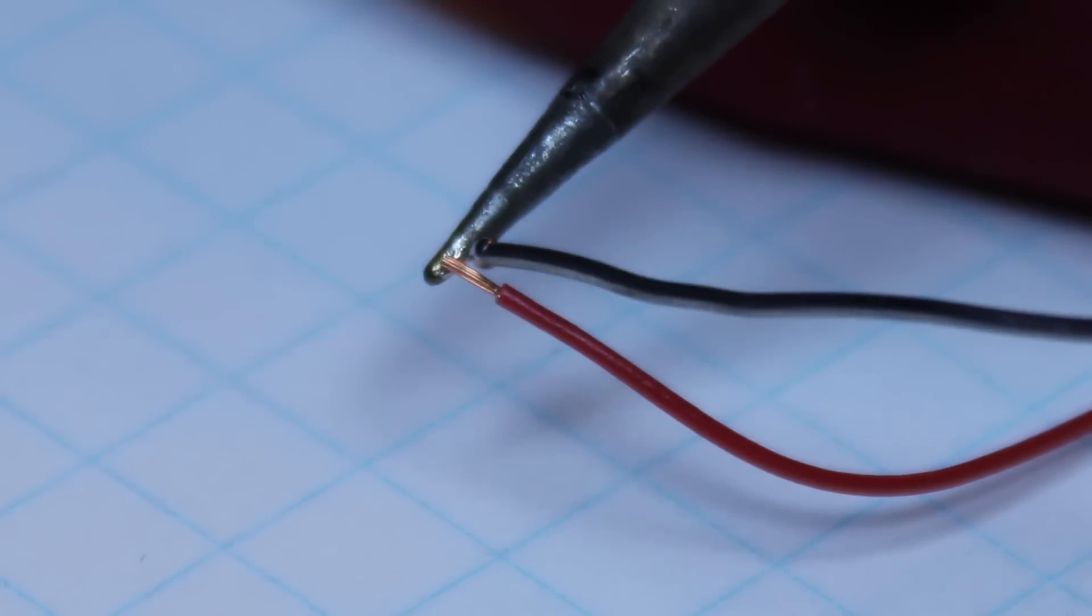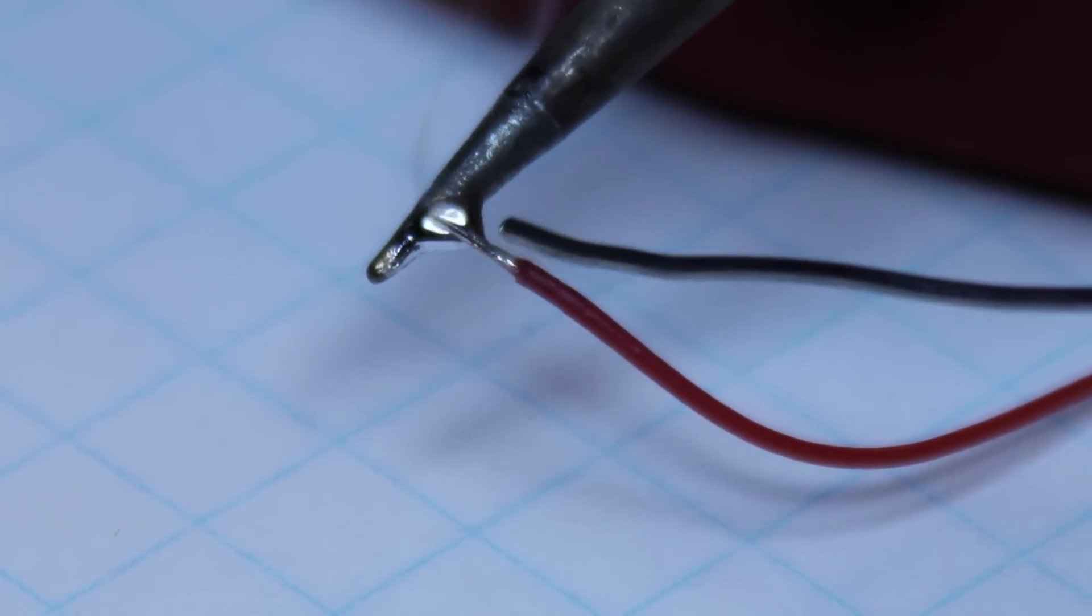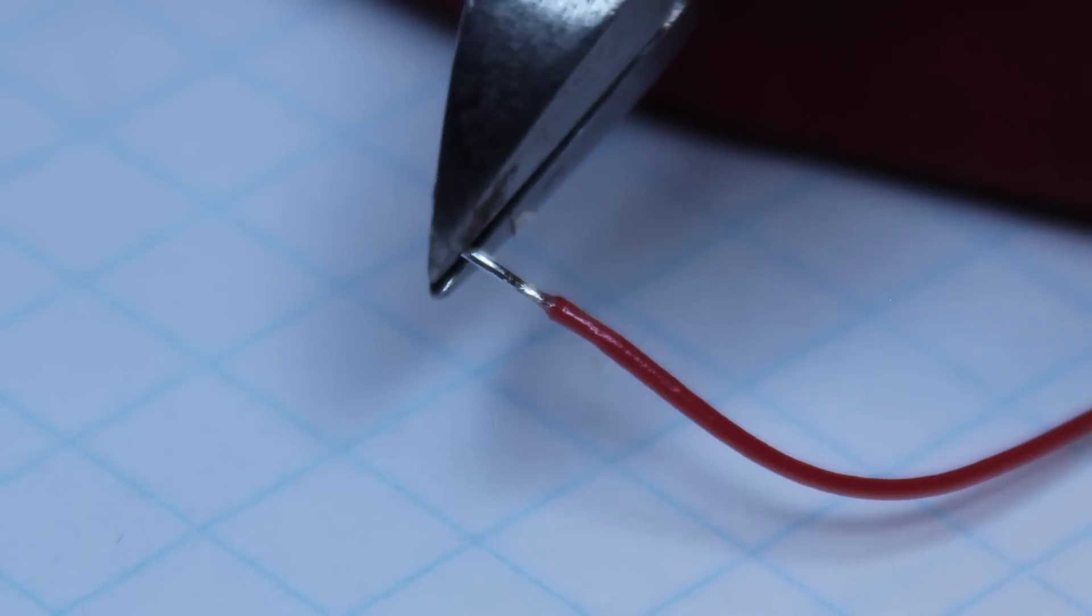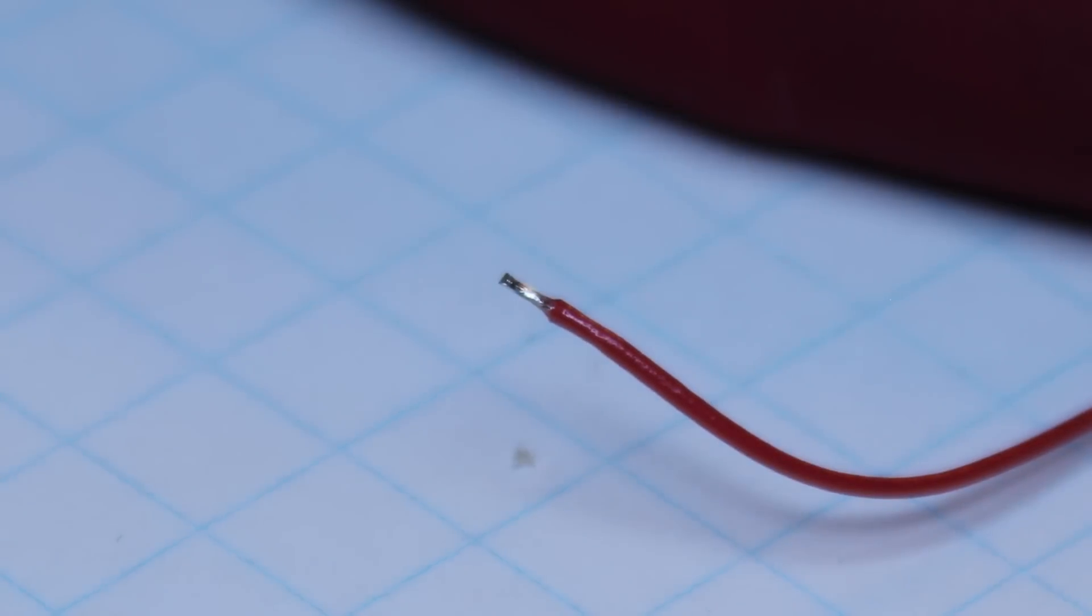Strip and tin three fine pieces of wire. This wire came from an old mouse cord. Trim the tinned portion of the wires to about 1/16th of an inch.